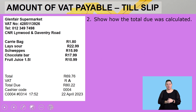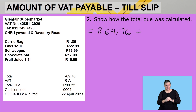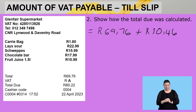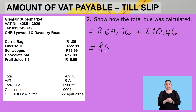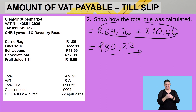The second question asks us to show how the total due was calculated. The total due is the total amount you will be paying after the VAT and cost price are added. We have R69.76 plus the VAT of R10.46, giving us a total due of R80.22. This total due comes from the addition of these two values.